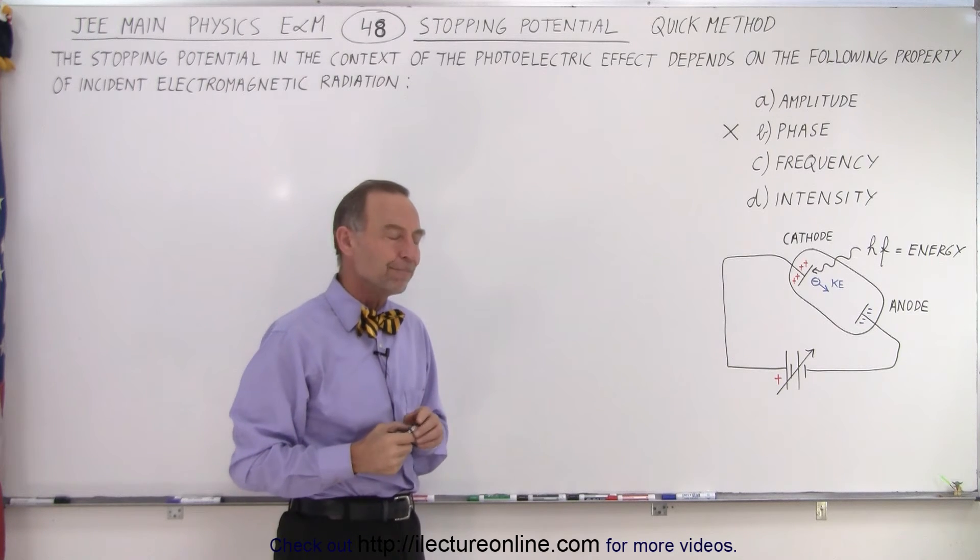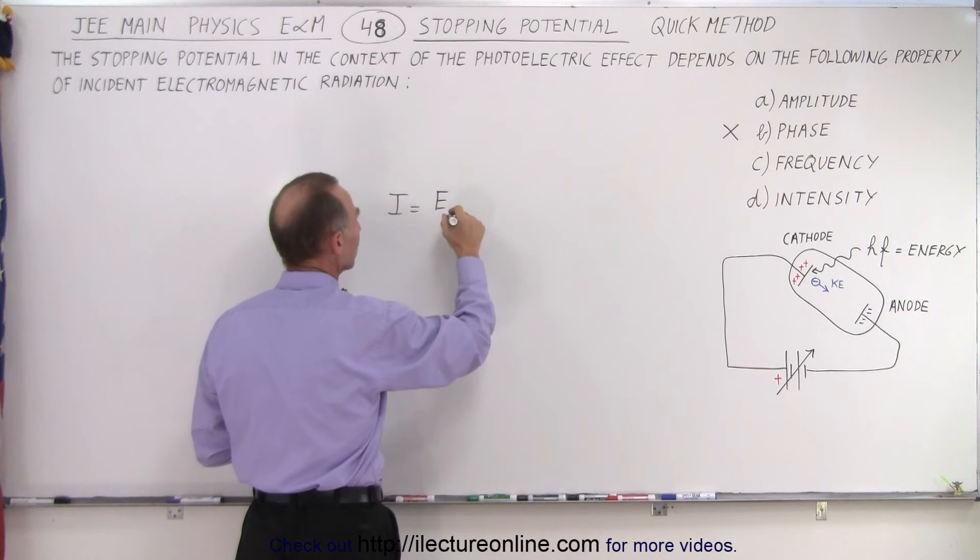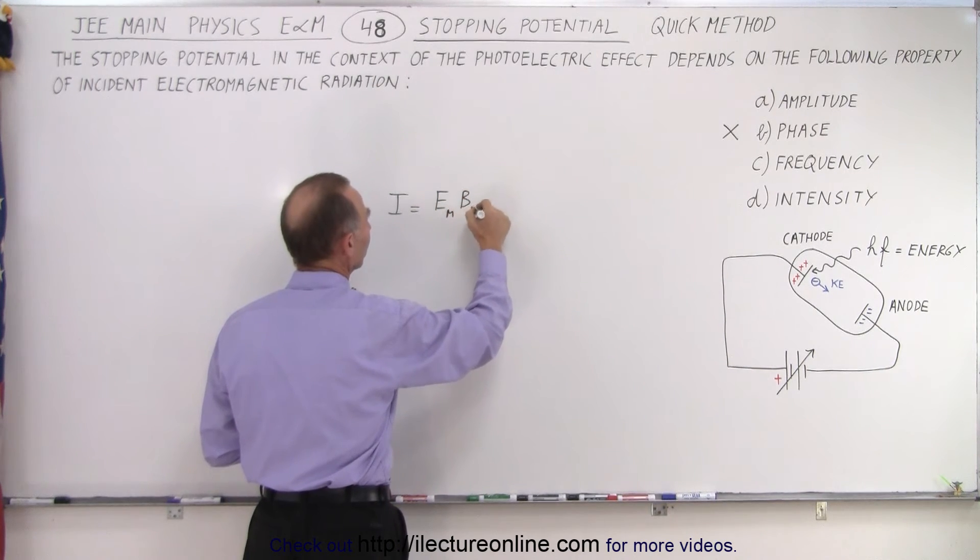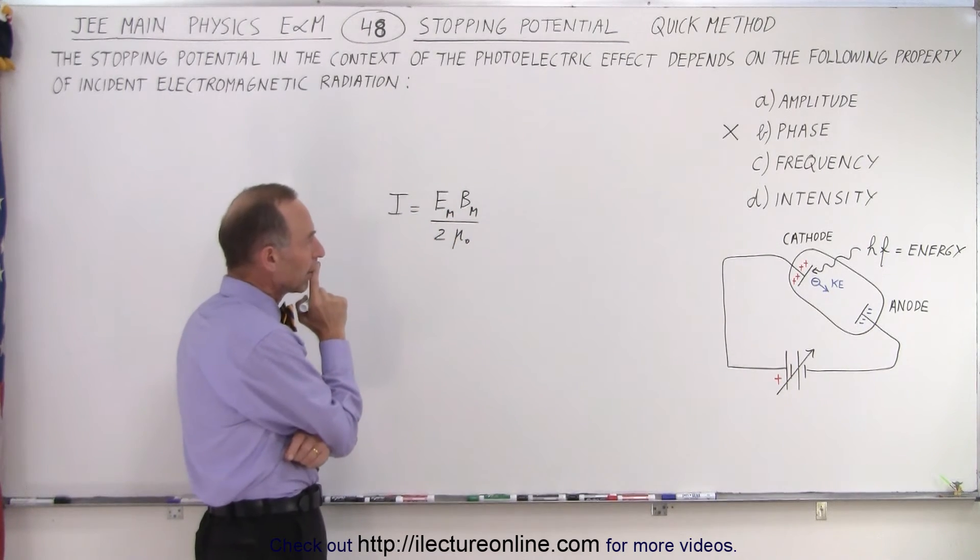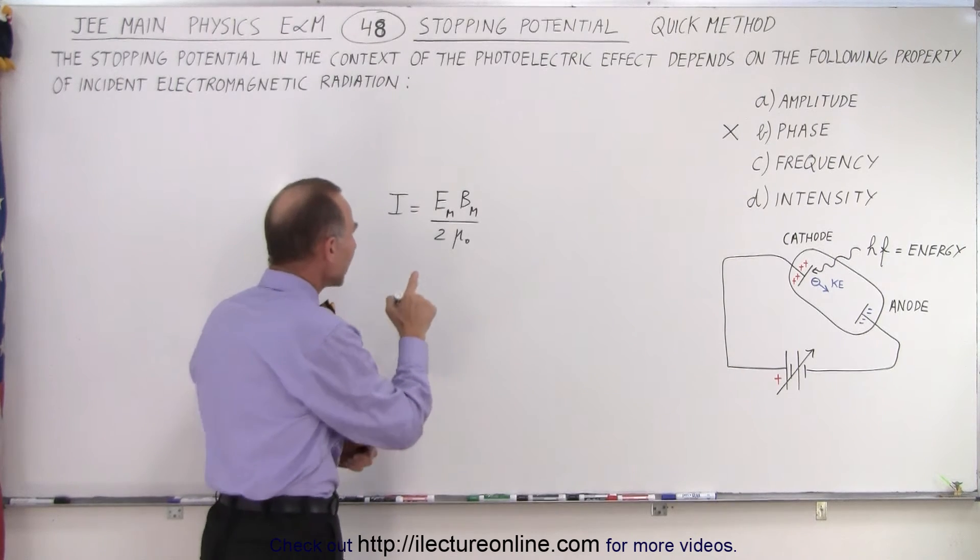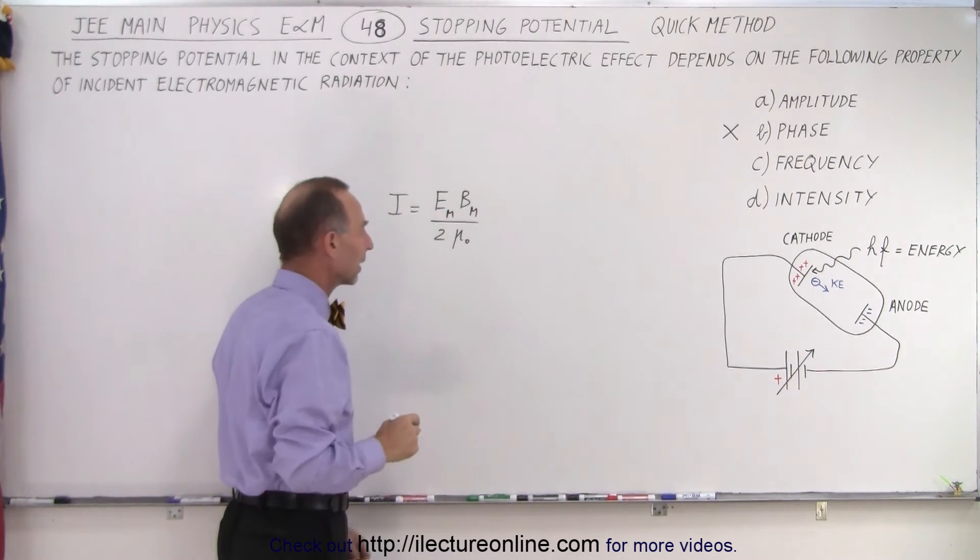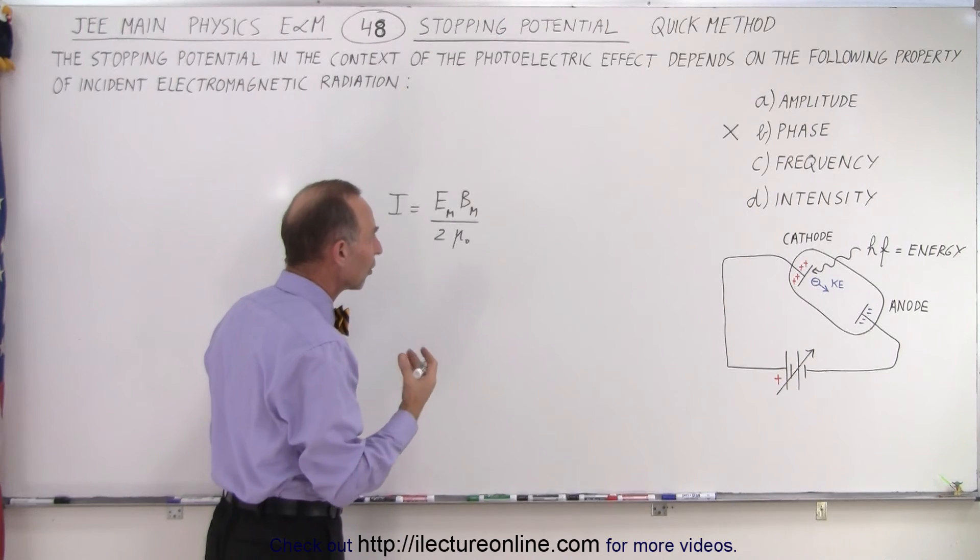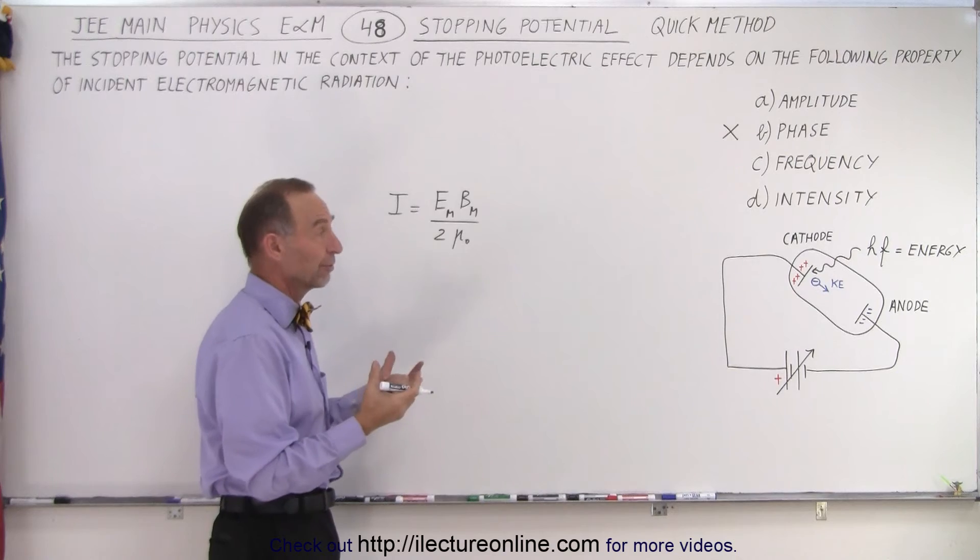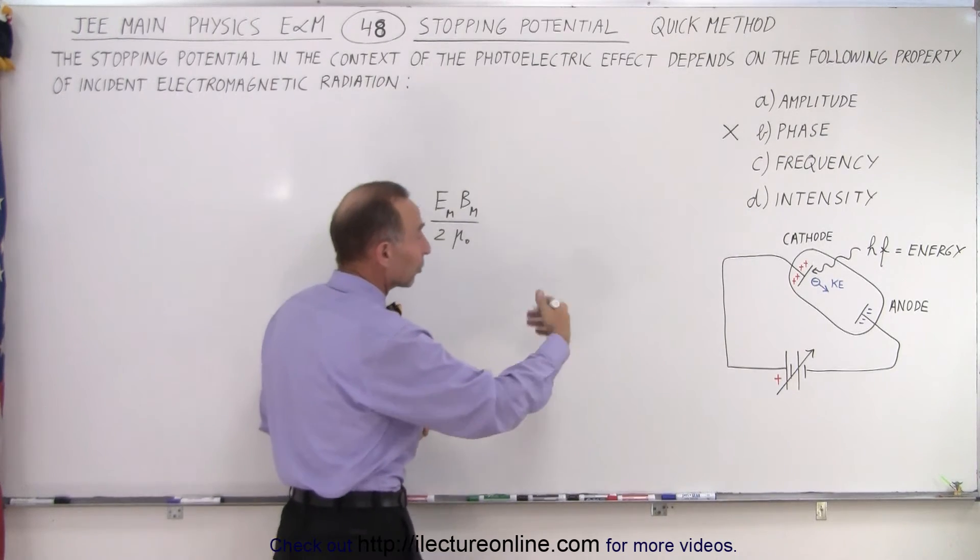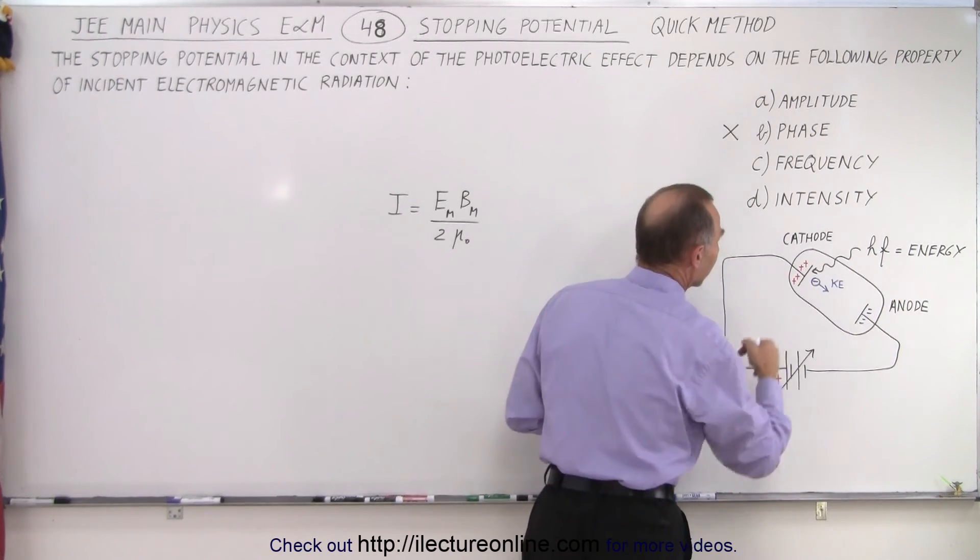What about the intensity? Well, the intensity is equal to the maximum strength of the electric field times the maximum strength of the magnetic field divided by two times mu-sub-naught. So notice that if we increase the intensity, we simply increase the magnitude of the electric field and the magnetic field. And that doesn't change the amount of energy in each photon, it simply increases the number of photons. So increasing the intensity is not going to give any more energy to any one specific electron being freed by the photon hitting the plate.